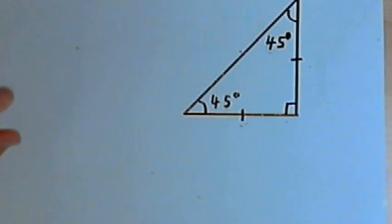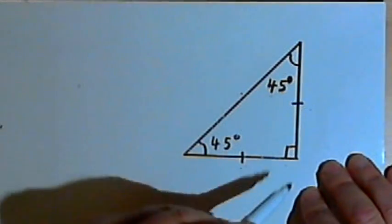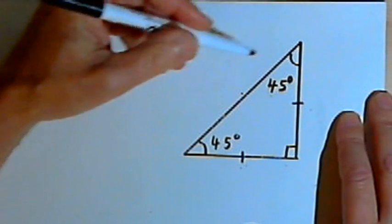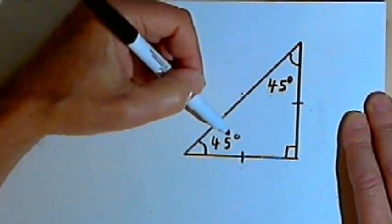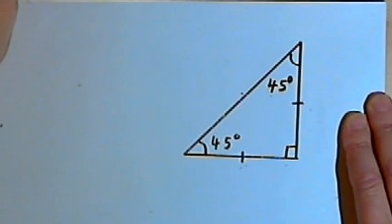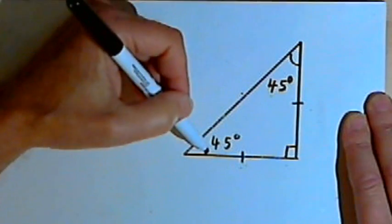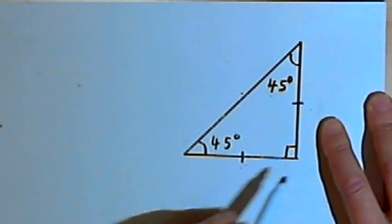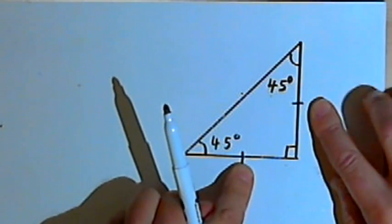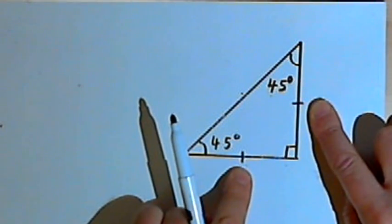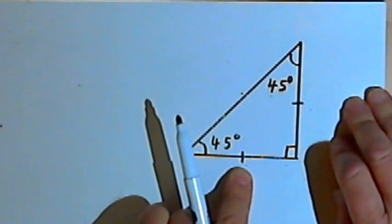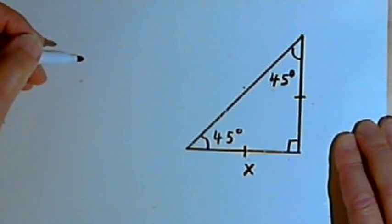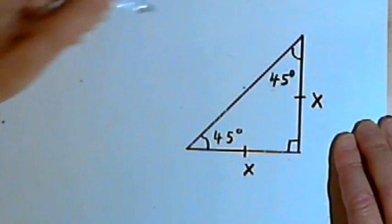Here's the first one. I've drawn a right triangle with the 90-degree angle labeled, and the other two angles are 45-degree angles. This is sometimes called a 45-45-90-degree triangle, and sometimes it's called an isosceles right triangle. It's isosceles because two angles are congruent, and since it's isosceles, the two legs — the sides next to the right angle — are congruent as well. So if the length of one leg is x, the other leg is x as well.